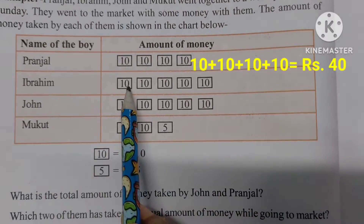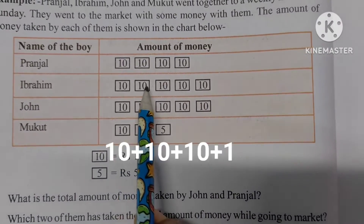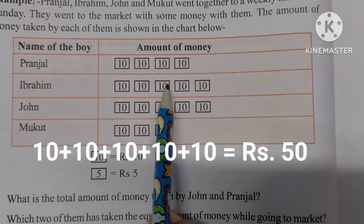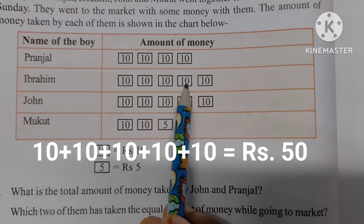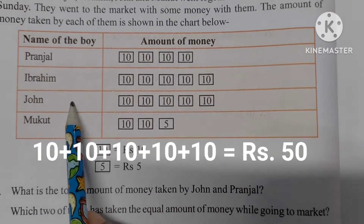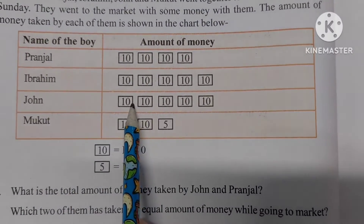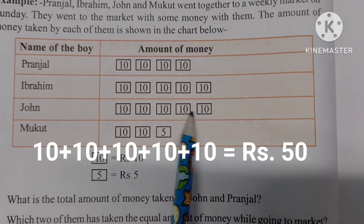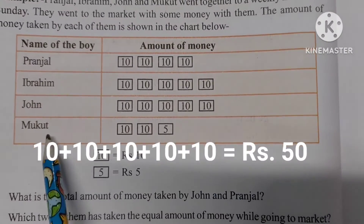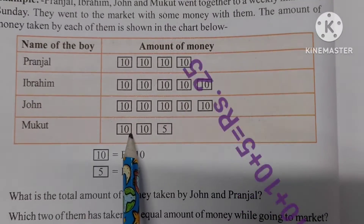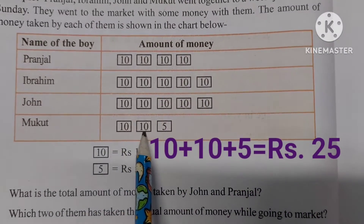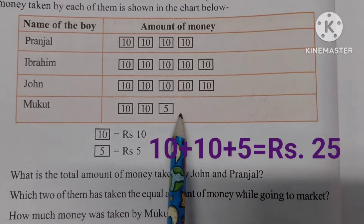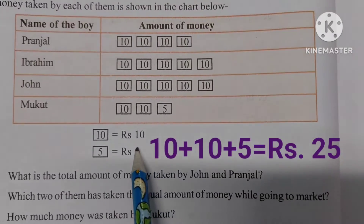Ibrahim: 10 plus 10, 20, 30, 40, 50. John: 10, 20, 30, 40, 50. Mukut: 10 plus 10, 20 plus 5, 25. We know that this symbol refers to rupees 10 and this symbol means rupees 5.